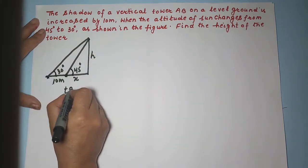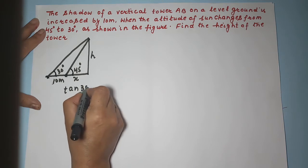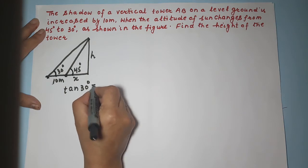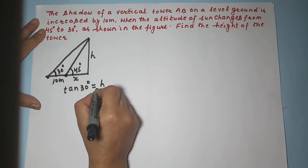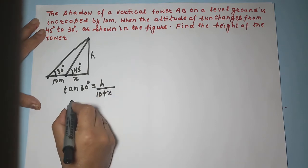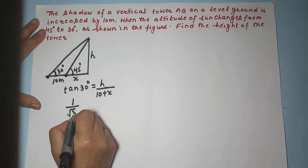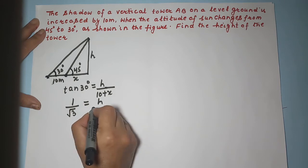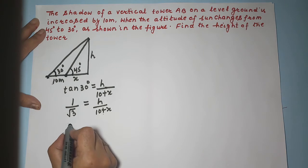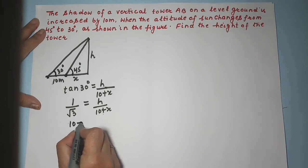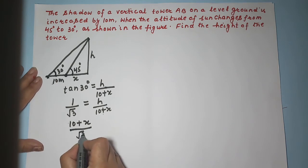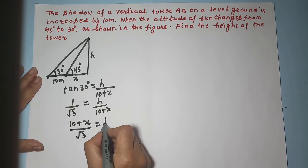I will first take tan 30 degrees using the larger triangle. The opposite is H and the adjacent is 10 plus X. So tan 30 equals 1 by root 3 equals H upon 10 plus X. Cross multiplying gives 10 plus X upon root 3 equals H. This is my first equation.